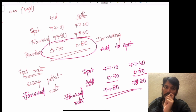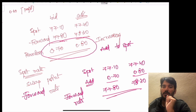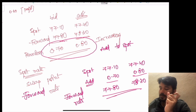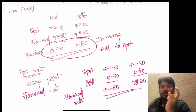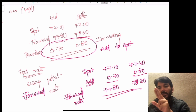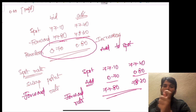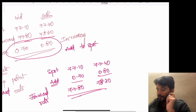In the question, the spot rate is given, and the swap points are given. If swap points are in increasing trend, add them to the spot rate to get the forward rate. If swap points are in decreasing trend, deduct them from the spot rate.